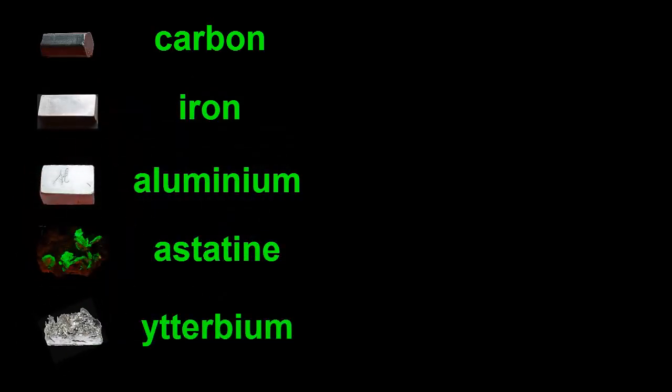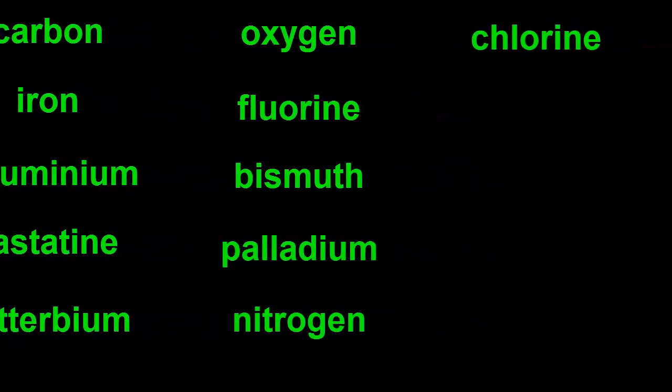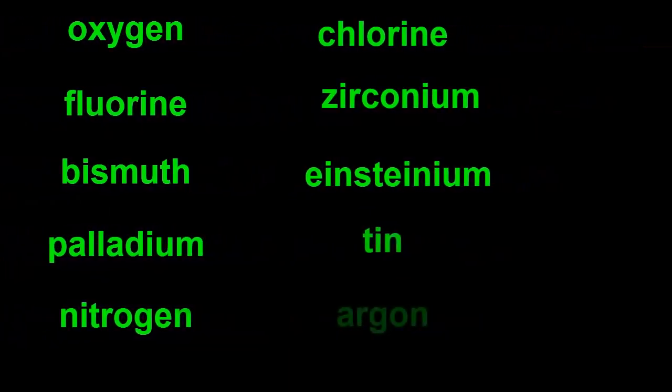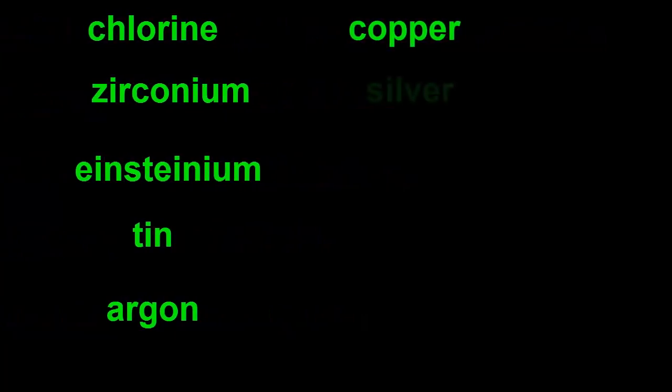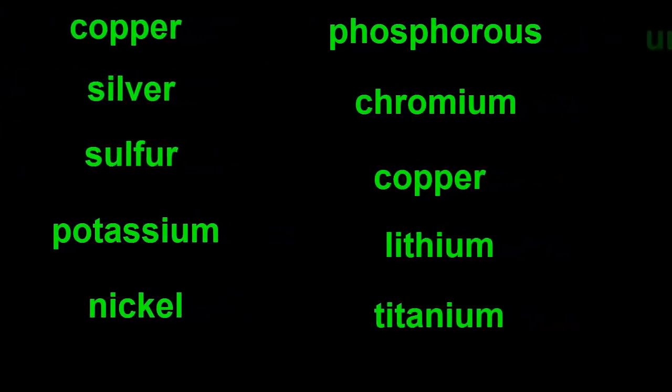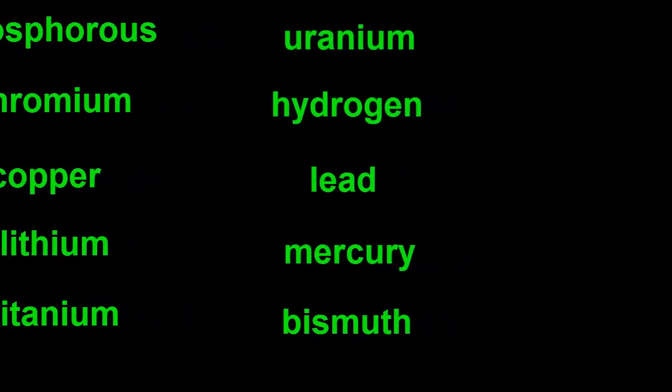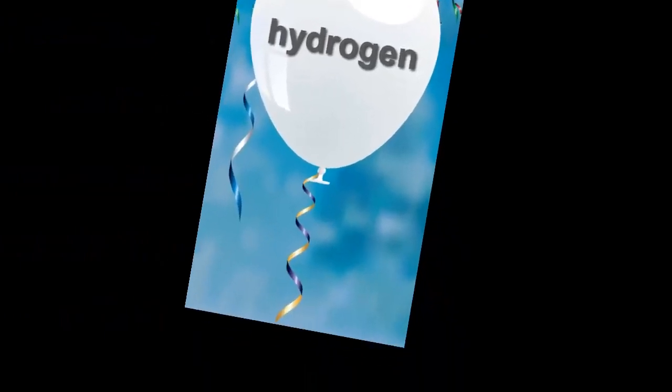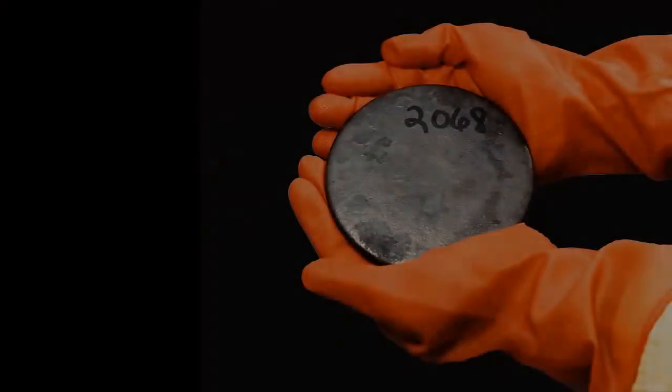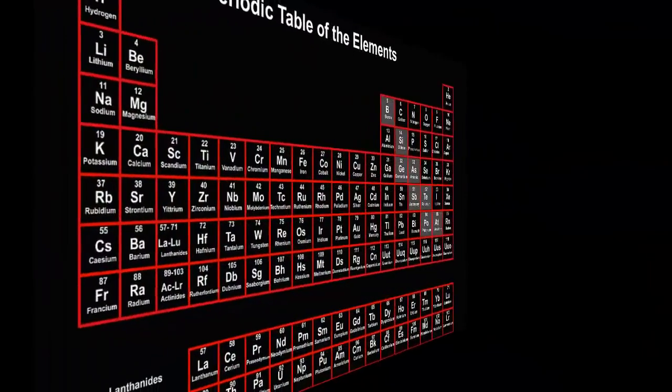With so many elements, there's a lot of names to remember. Fortunately, there's a list showing all the elements. It starts with the element with the lightest atoms, hydrogen, and goes to the element with the heaviest atoms, uranium. This list is called the periodic table.